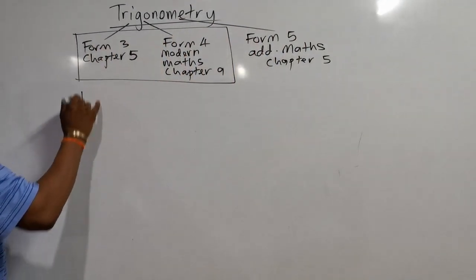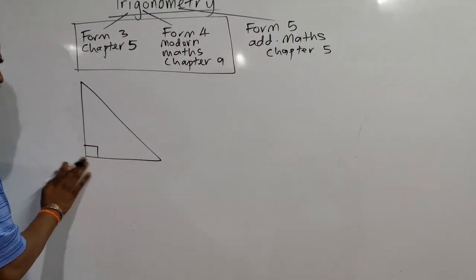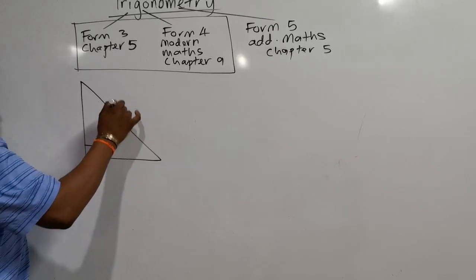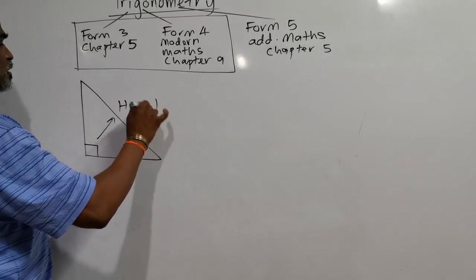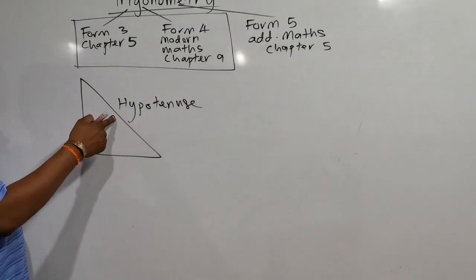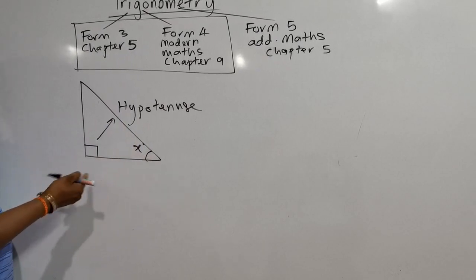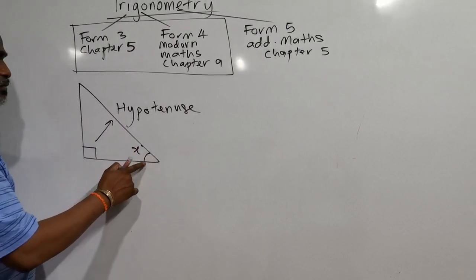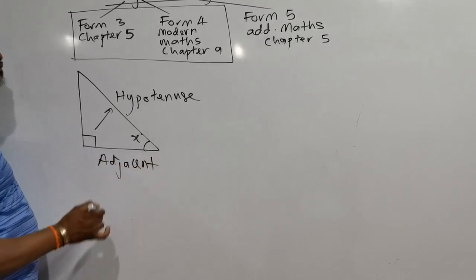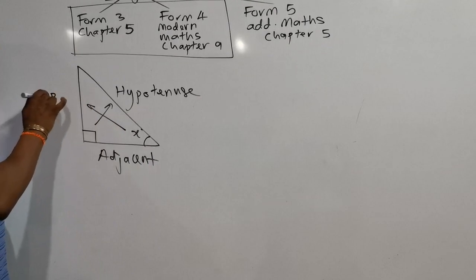Before I start trigonometry, you must understand that whenever you see trigonometry, there must be a 90-degree right angle triangle. The side opposite the 90 degrees is called the hypotenuse. The side beside the angle is called adjacent — adjacent means beside. The side opposite the acute angle is called opposite.